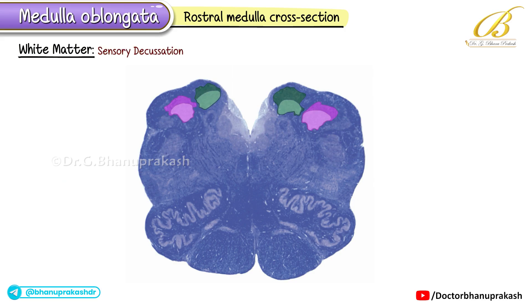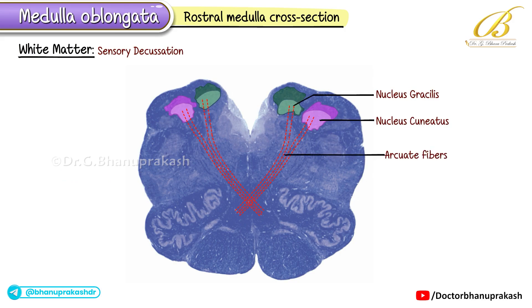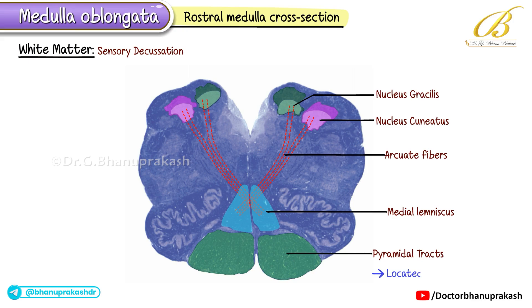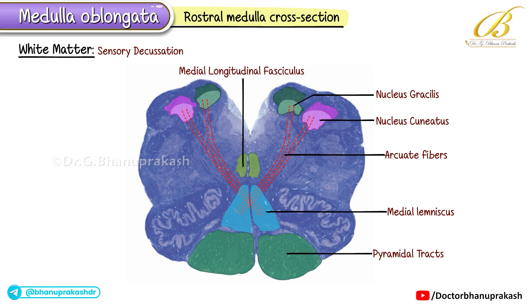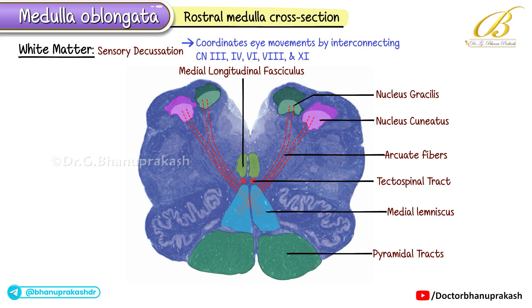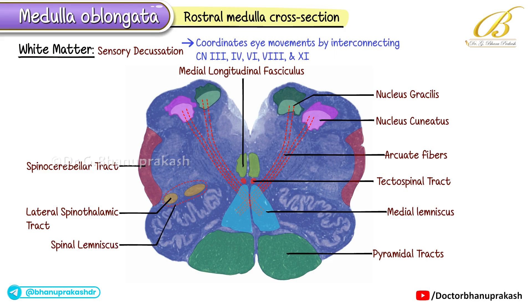In the white matter at this level, the sensory decussation occurs: fibers from the gracilis and cuneatus nuclei — the arcuate fibers — cross to the opposite side, forming the medial lemniscus. This crossing separates the trigeminal nucleus from the central gray region. The pyramidal tracts are still located ventrally, above the level where they decussate. The medial longitudinal fasciculus (MLF), a compact tract near the midline, coordinates eye movements by interconnecting cranial nerves 3, 4, 6, 8, and 11. The tectospinal tract is positioned dorsally relative to the MLF, and the spinocerebellar and lateral spinothalamic tracts are found in the lateral white columns, with the spinal lemniscus formed by the anterior and lateral spinothalamic tracts combined.